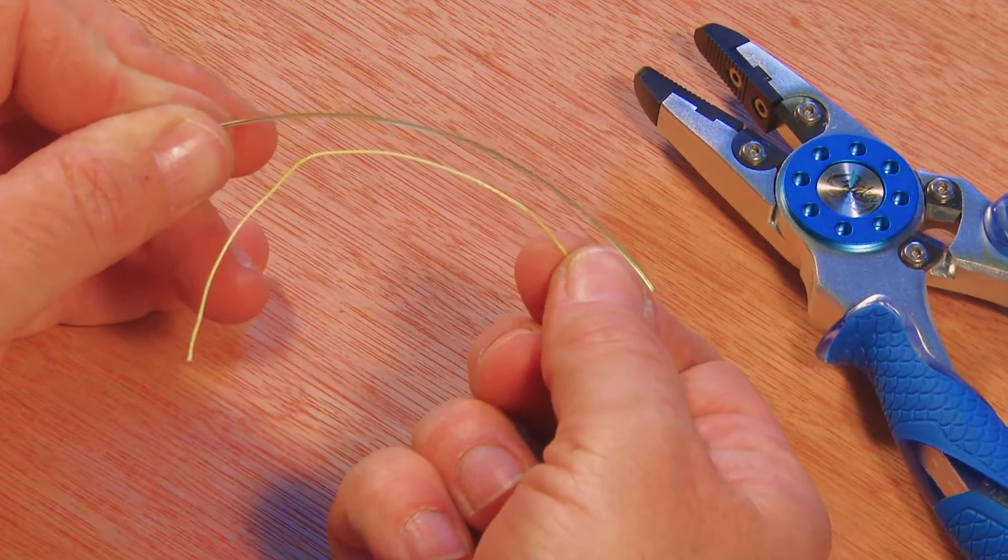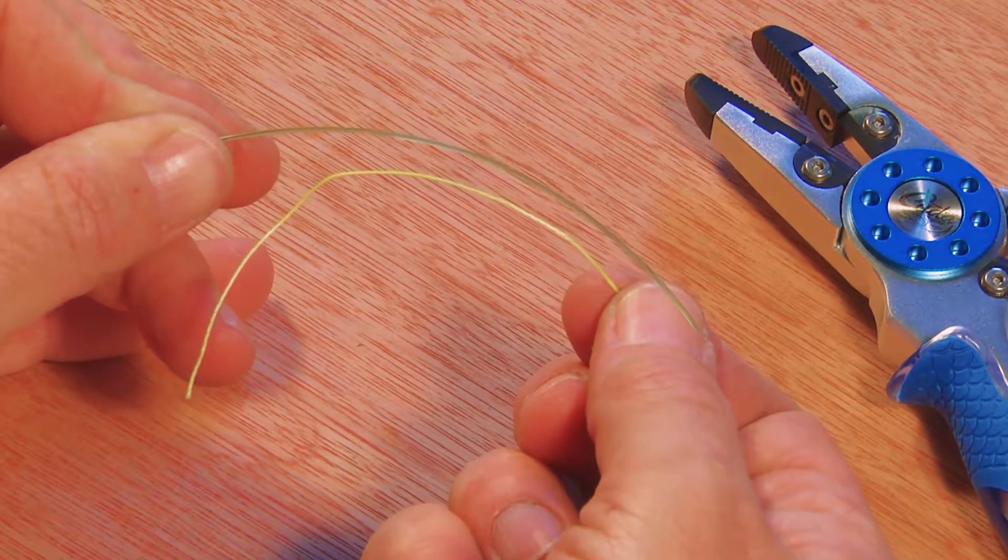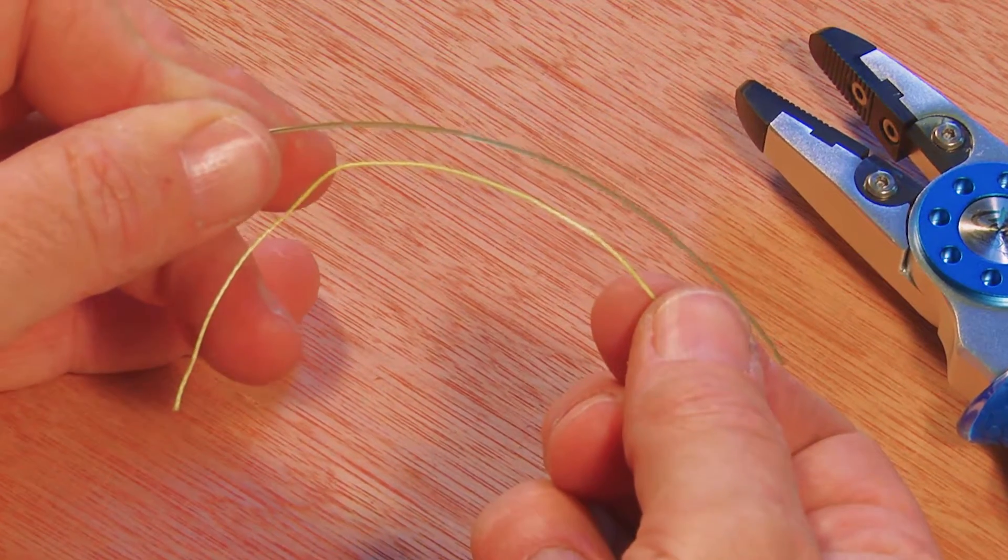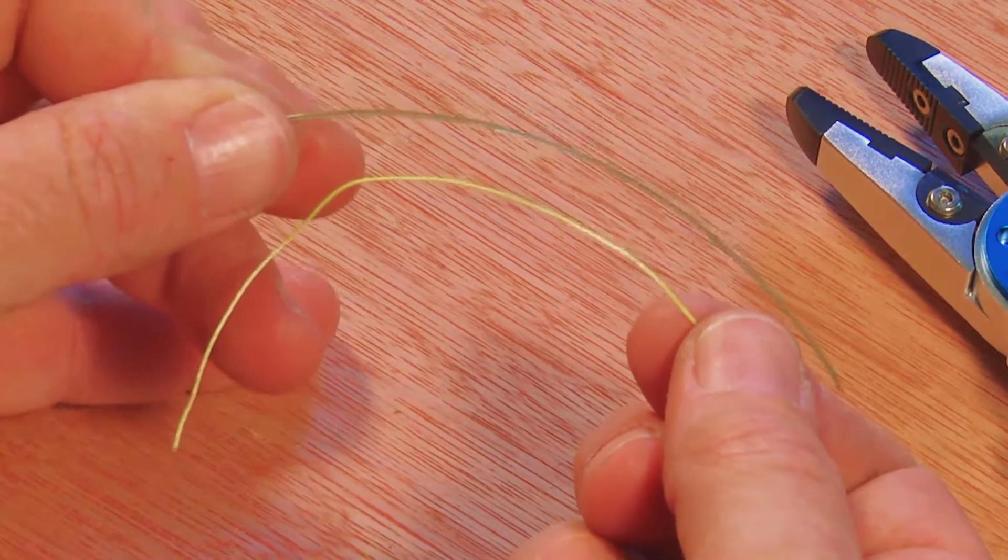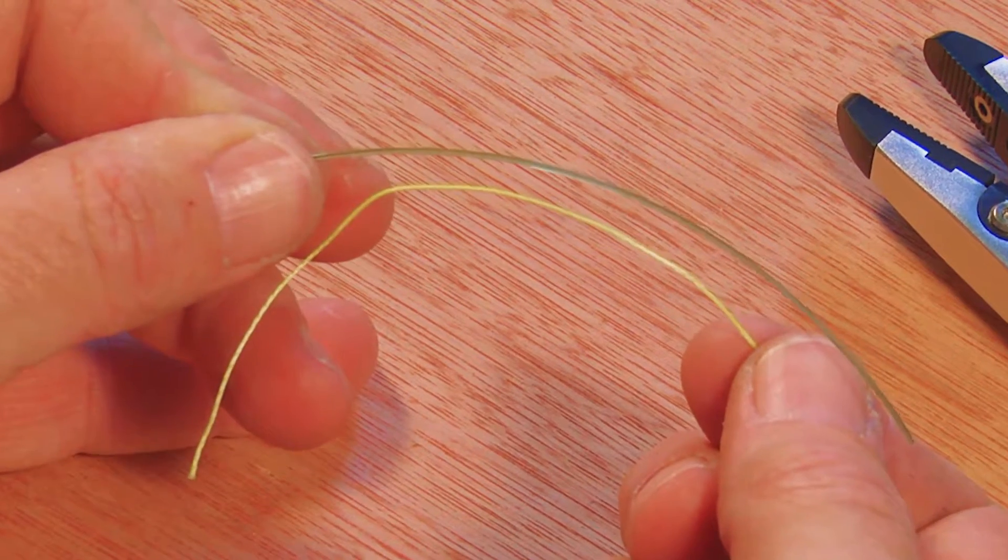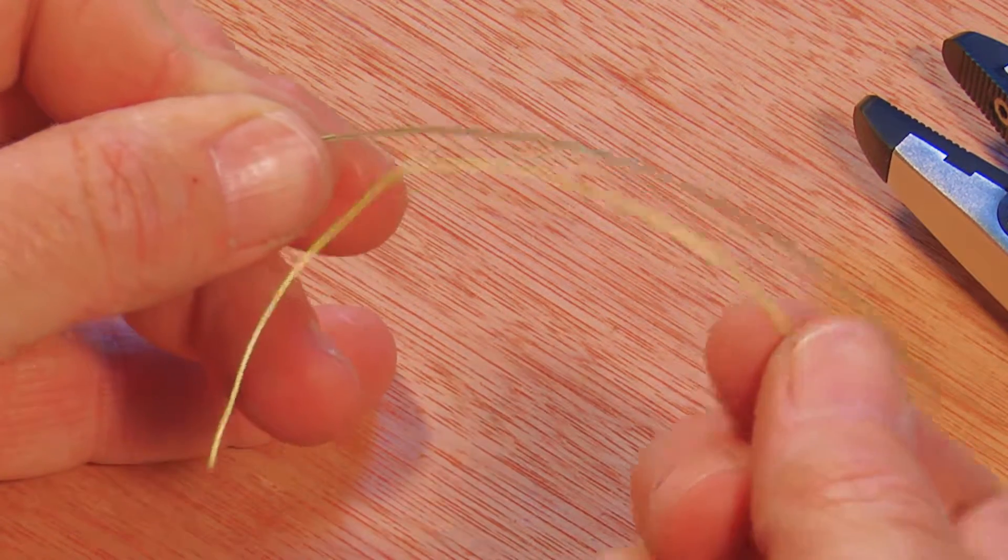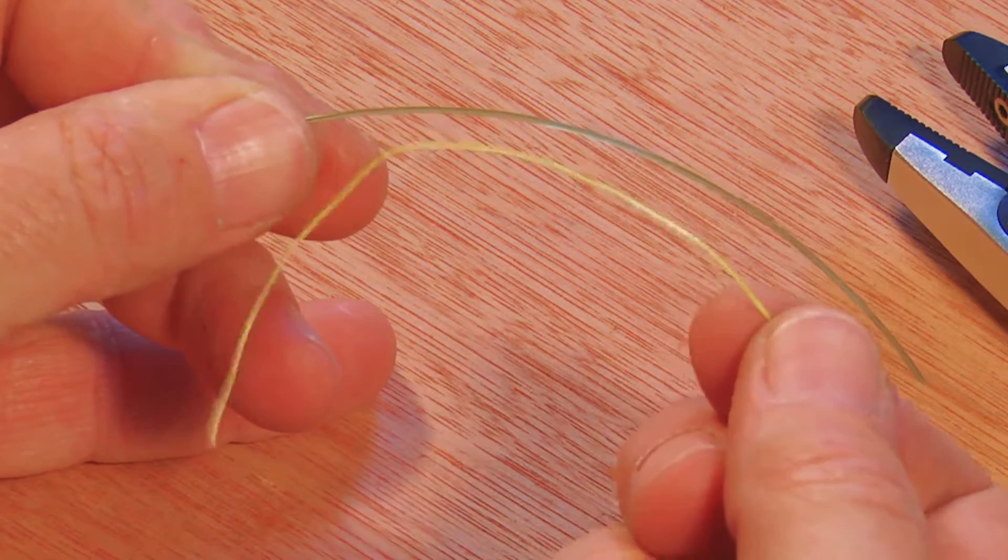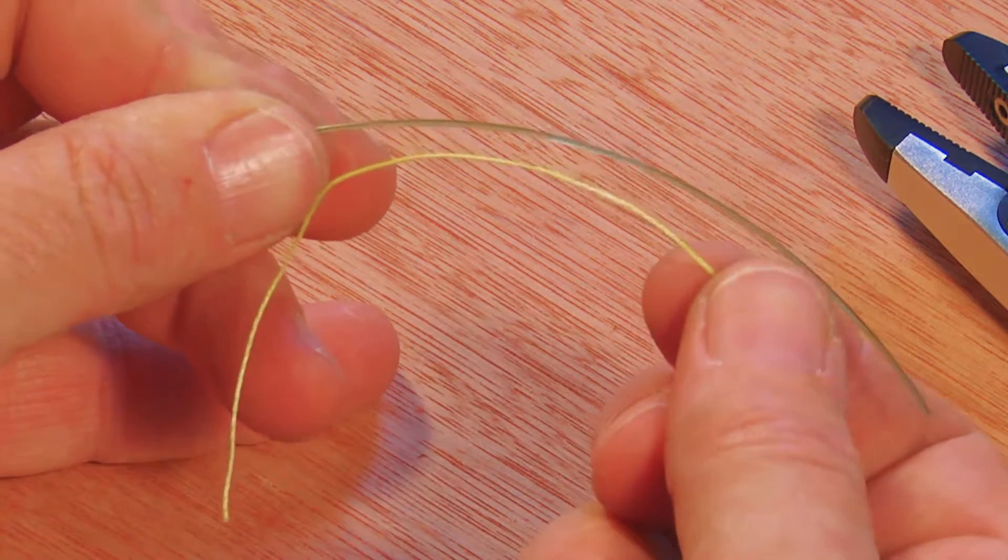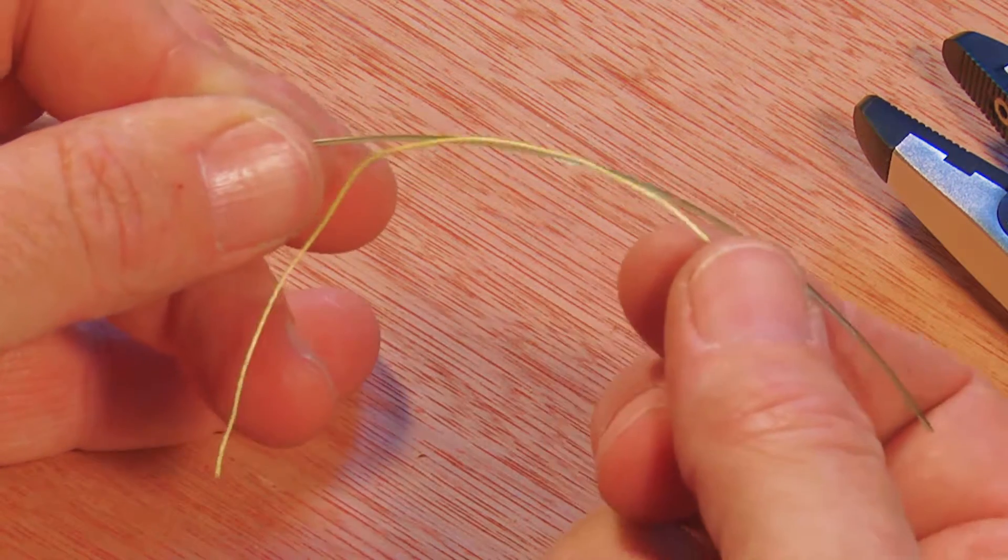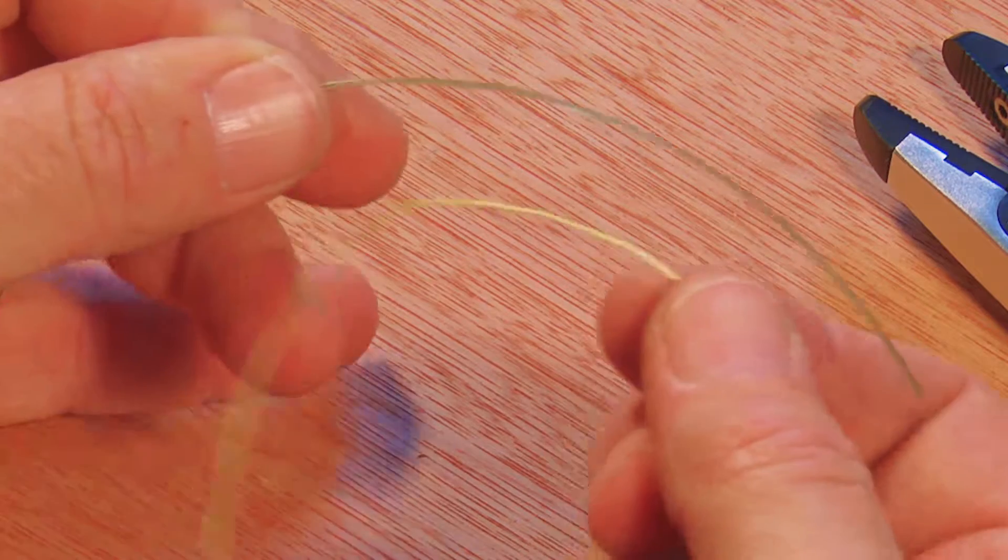If I were to tie two standard Uni Knots, making a double Uni or Uni-to-Uni connection, it's possible that the braid would slip through or even cut through the monofilament because of its small diameter. So here's what we're going to do.